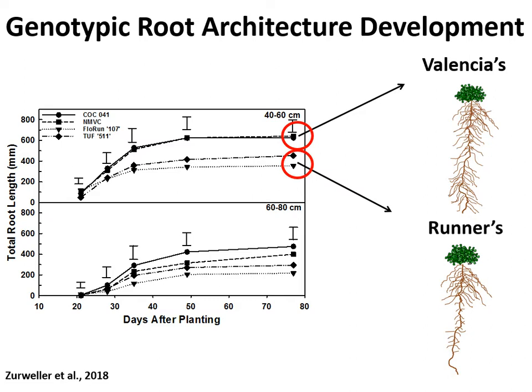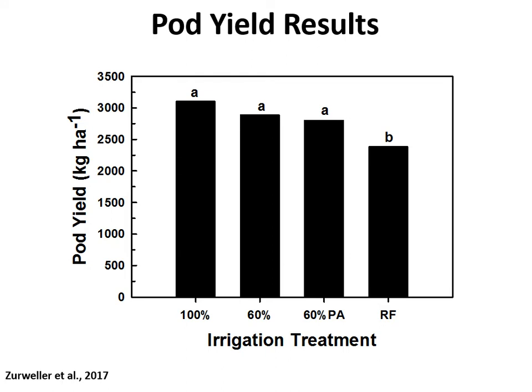While it might be assumed that Valencias' deeper roots allow them to acquire more water and thus confer greater drought tolerance, the yield results did not support this. Across both years and all four irrigation treatments, yield declined as irrigation decreased toward the rain-fed control, indicating drought stress — but that yield decline was the same across all four genotypes. Having more roots deeper in the soil profile, particularly in the Fastigiata descent lines, did not result in additional root water uptake or reduced yield decline under limited water.